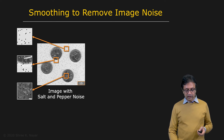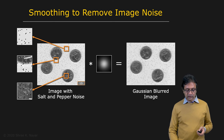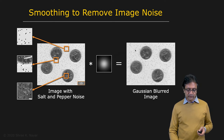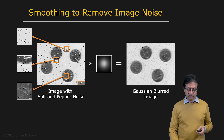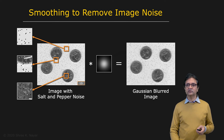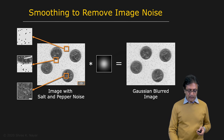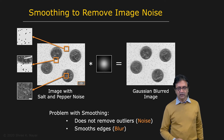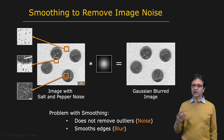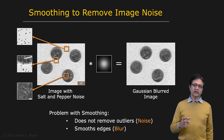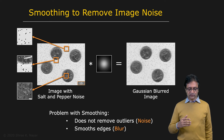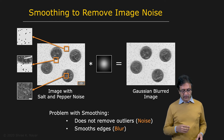If you simply apply a Gaussian filter to this, you can see that you sort of diminish the noise a little bit. But what you're really doing is smearing the noise out — you're not really removing it. And at the same time, you're losing some of the details on the coins. So the problem with smoothing is it doesn't really remove the outliers, the salt and pepper noise, and at the same time you're actually blurring out the edges.